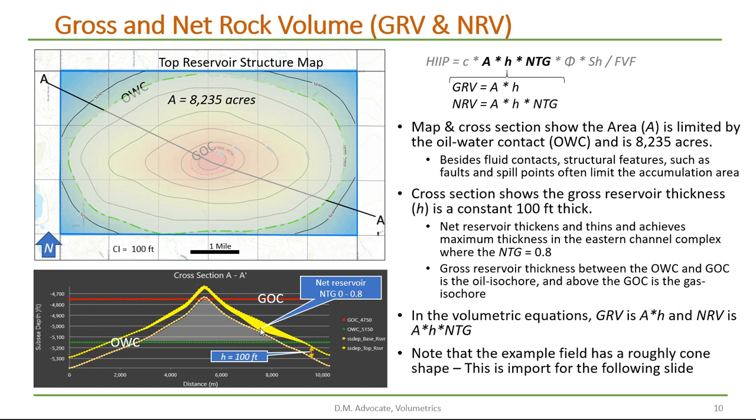And as we move off to the northwest we see that the net to gross decreases. Note that the cross sectional shape of our field is roughly a cone. This is important in the following slide.